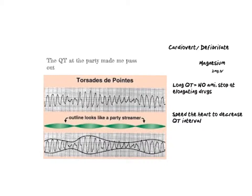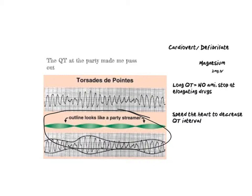This is torsades. I call it 'the cutie at the party made me pass out' because it's usually associated with a long QT interval. It kind of looks like a party streamer. This is also called VTAC, but it's polymorphic VTAC, whereas the one before was monomorphic. So monomorphic is McDonald's, and torsades — polymorphic — is the cutie at the party. The biggest thing here is to cardiovert or defibrillate depending on whether they have a pulse or not.